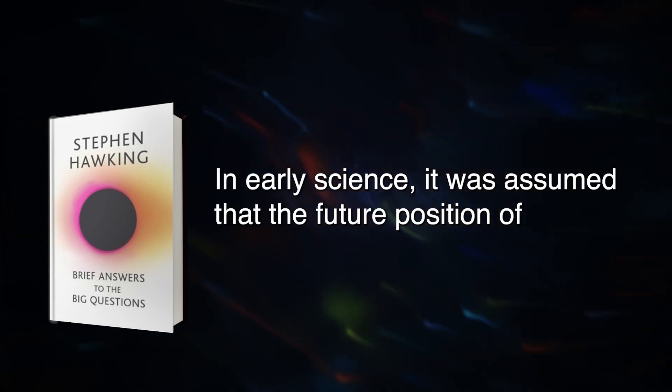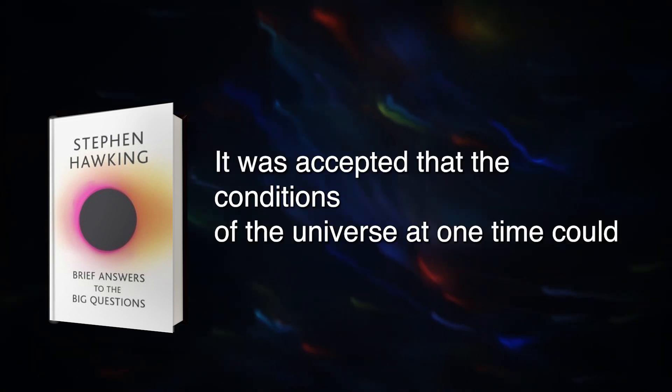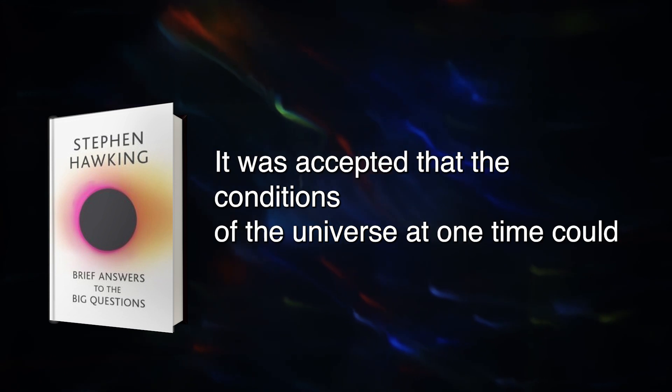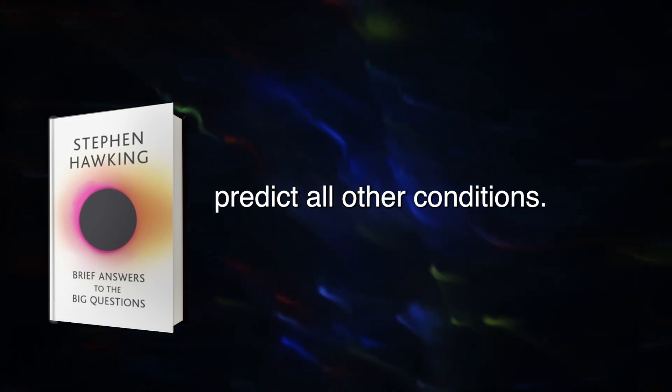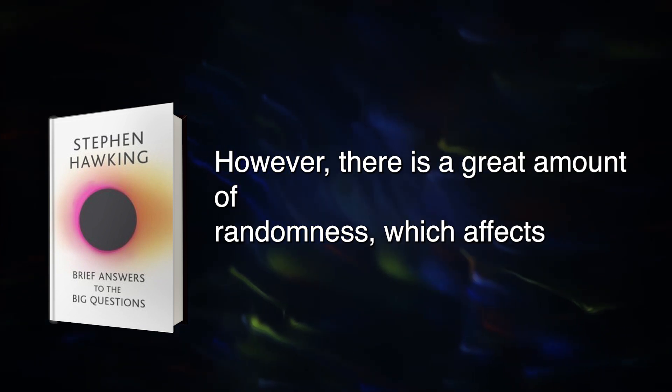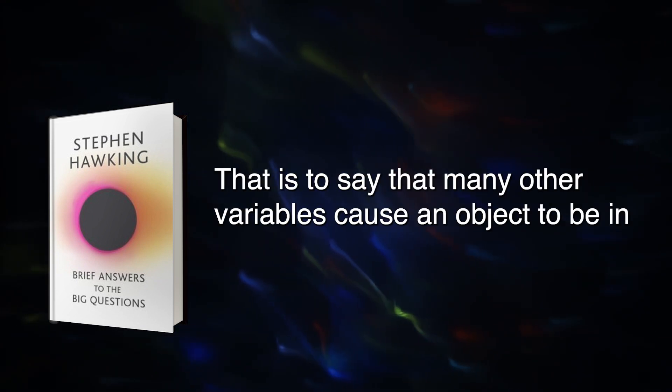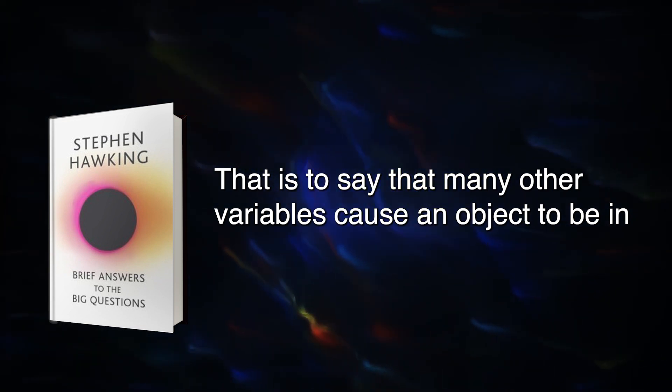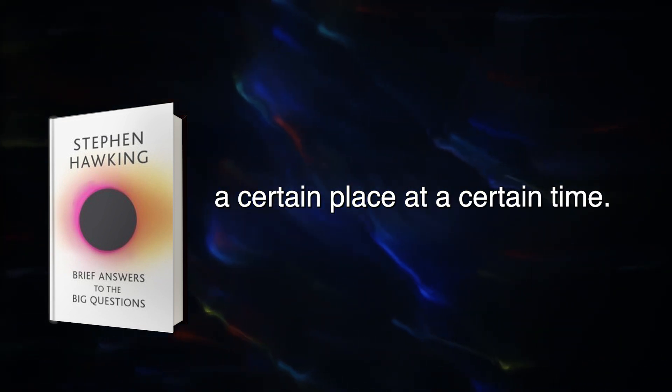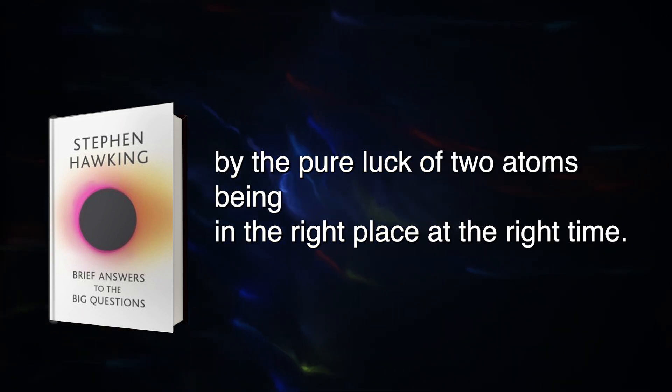In early science, it was assumed that the future position of objects could be ascertained if their current position was known. It was accepted that the conditions of the universe at one time could predict all other conditions. If this were true, science could predict the future. However, there is a great amount of randomness which affects conditions that are too complex to calculate. Many of the happenings of the universe are up to chance and can occur just by the pure luck of two atoms being in the right place at the right time.